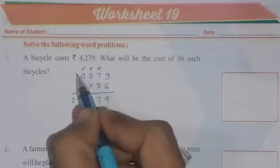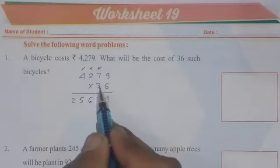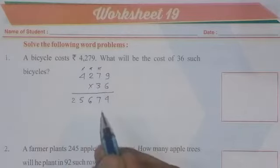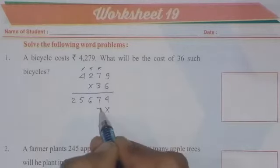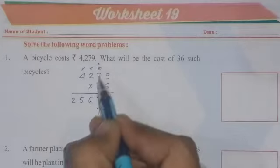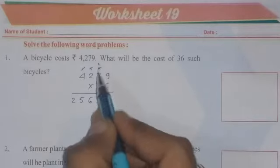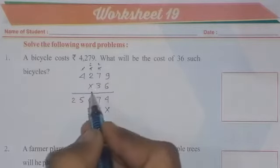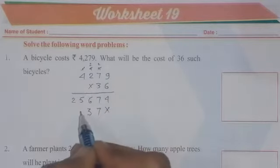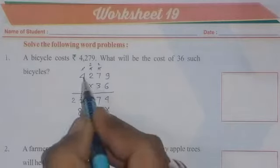Now cancel all the carries. Now start from here. 3 times 9 is 27, but first you have to mark a cross here. 3 times 9 is 27, so 7 carry 2. 3 times 7 is 21, so 21 plus 2 is 23, so 3 here and 2 in carry. 3 times 2 is 6, 6 plus 2 is 8. And last 3 times 4 is 12.